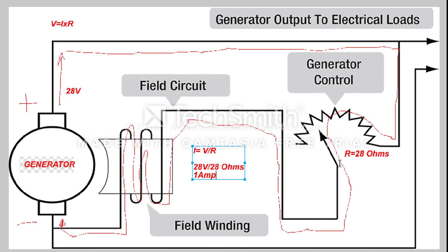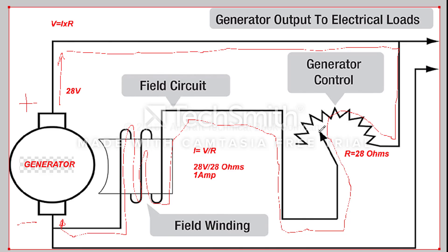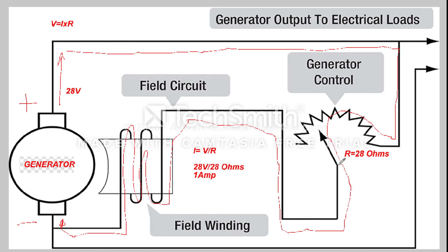If we move the variable resistor pick-off from left to right or from right to left, we are effectively changing the value of resistance — increasing or decreasing — which in turn changes the current, which changes the magnetic field, which changes the output voltage. Let's go through a scenario: if I move my pick-off to the right, we need to determine whether that is an increase or a decrease in resistance.